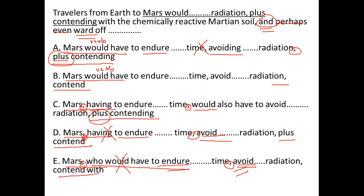Option B says 'would have to endure, avoid, contend' — they are parallel. Option C says 'would also have to avoid, again plus contending.' You cannot use 'plus' to join two elements — we need 'and' — and 'contending' is not parallel to the base form. So there's a parallelism problem in C. Hence B is the correct option.